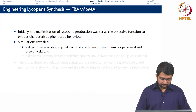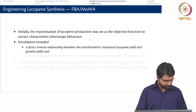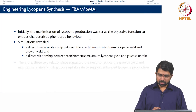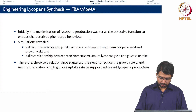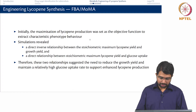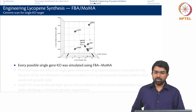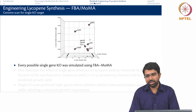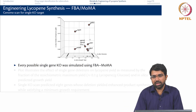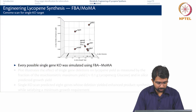They also found a direct relationship between stoichiometric maximum lycopene yield and glucose uptake. So you need a trade-off: you want to reduce the growth yield somewhat and also maintain a high glucose uptake rate for enhanced lycopene production. The method they used was to knock out every gene to see if it could positively impact lycopene production, simulating each knockout using FBA and MoMA.